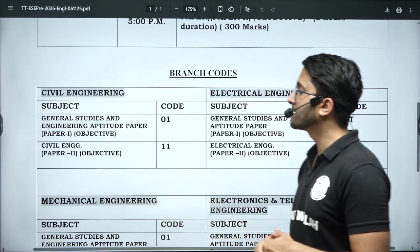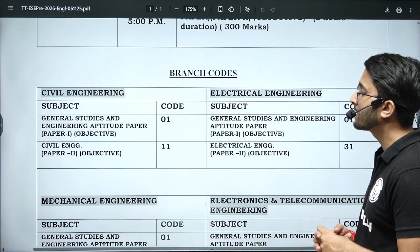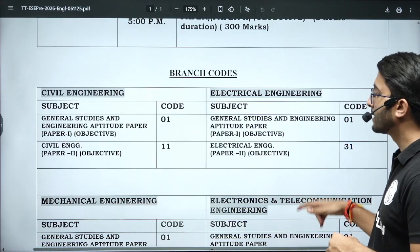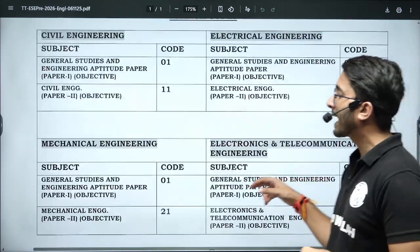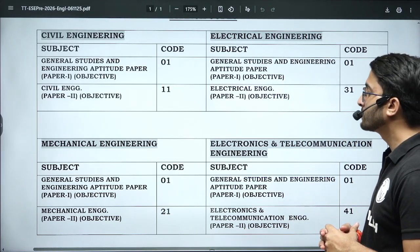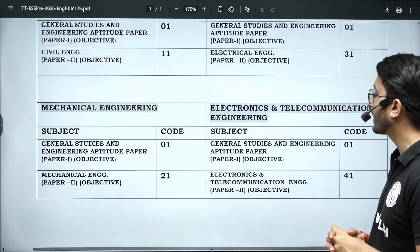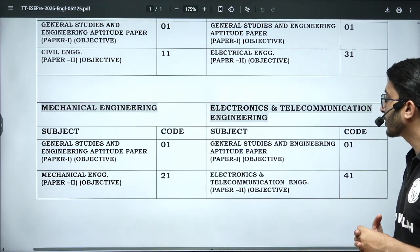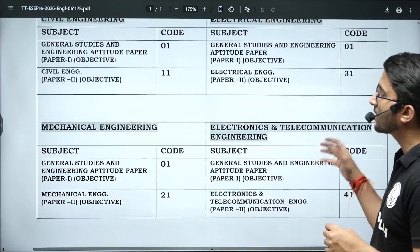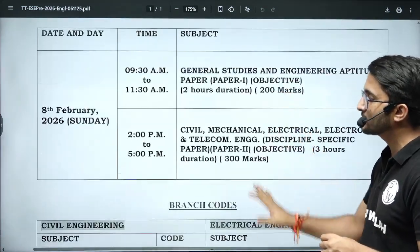The paper codes are as follows: General Studies and Engineering Aptitude Paper 1 Objective — code 01. Civil Engineering Paper 2 Objective — code 11. Electrical Engineering Paper 2 Objective — code 31. Mechanical Engineering Paper 2 Objective — code 21. Electronics and Telecommunication Engineering — code 41. This is the official code and the examination timetable for Stage 1.